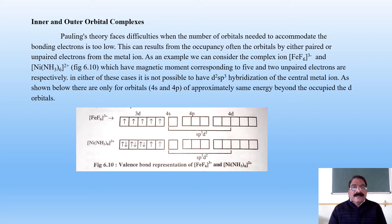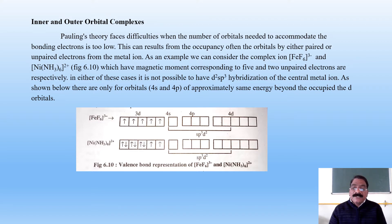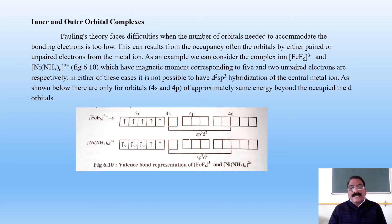In FeF6³⁻, the 3d orbitals have 5 unpaired electrons and cannot take part in bonding. So 4s, 4p, and 4d orbitals take part in bonding and hybridization must be sp3d2. The same is the case for Ni(NH3)6²⁺, where the 3d orbital has two unpaired electrons. Hence it also does not use the 3d orbital; instead it uses the 4d orbital and hybridization is sp3d2.